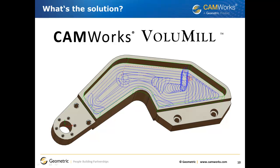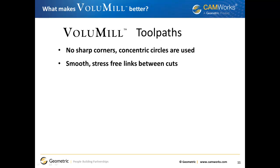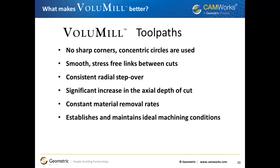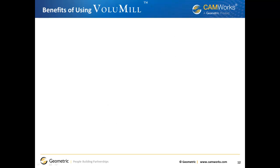So what's the solution? CAMWorks Volume Mill will create better tool paths for your roughing operations. Volume Mill toolpaths have no sharp corners — instead, concentric circles are used to develop the toolpath. Volume Mill creates smooth, stress-free links between cuts. The roughing passes have a consistent radial step-over, and the axial depth of cut can be significantly increased. Constant material removal rates can be maintained, allowing the machine and cutting tools to run under ideal conditions regardless of part geometry.